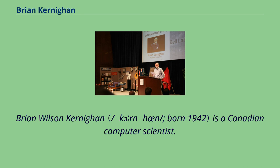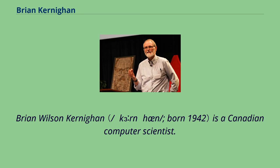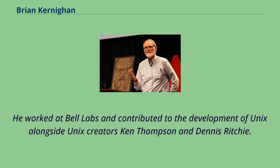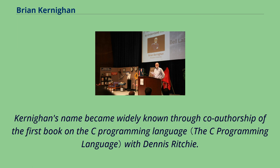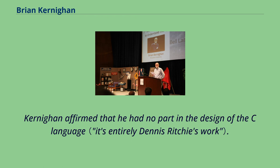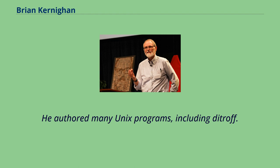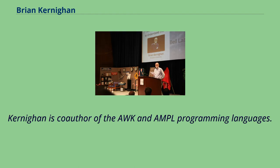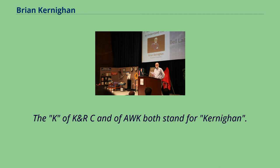Brian Wilson Kernighan is a Canadian computer scientist. He worked at Bell Labs and contributed to the development of Unix alongside Unix creators Ken Thompson and Dennis Ritchie. Kernighan's name became widely known through co-authorship of the first book on the C programming language with Dennis Ritchie, though he affirmed he had no part in the design of C. He authored many Unix programs, including DeTroff, and is co-author of the AWK and AMPL programming languages. The K of K&R and of AWK both stand for Kernighan.